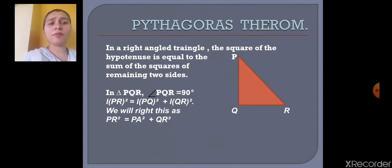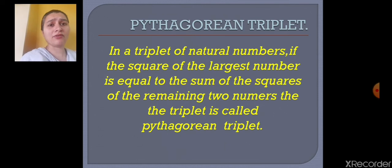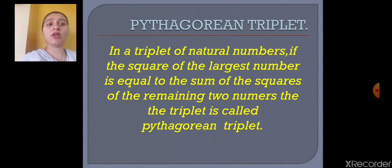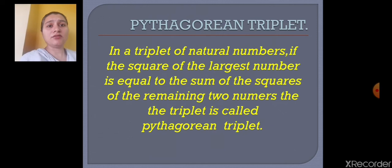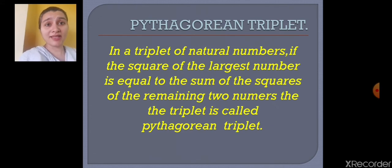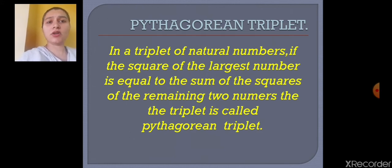After Pythagoras Theorem, we will go to Pythagorean Triplet. A Pythagorean Triplet states that in a triplet of natural numbers, if the square of the largest number is equal to the sum of squares of the remaining two numbers, the triplet is called a Pythagorean Triplet. For example, with numbers 3, 4, 5 — 5 is the biggest, and 5 squared equals 3 squared plus 4 squared.